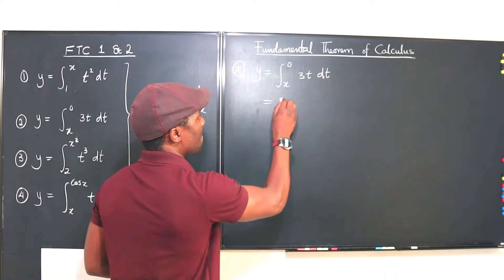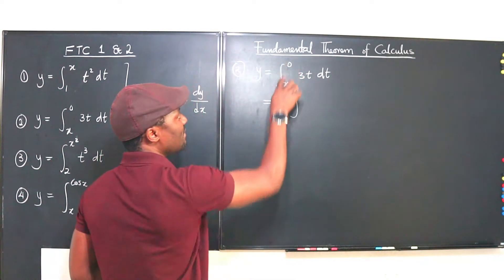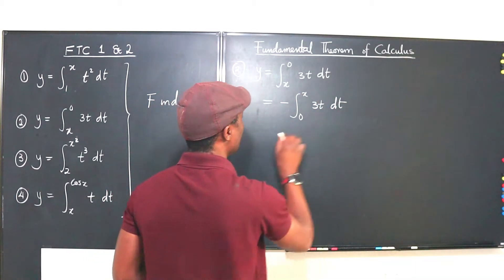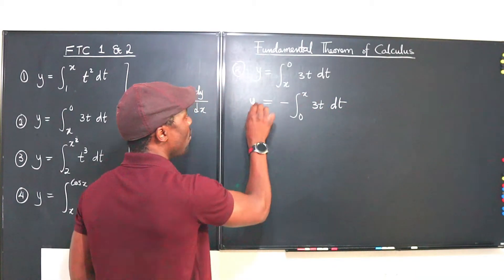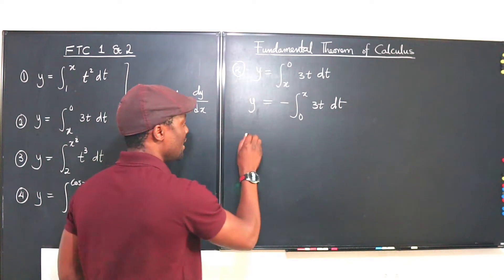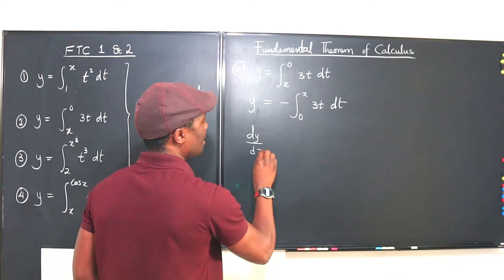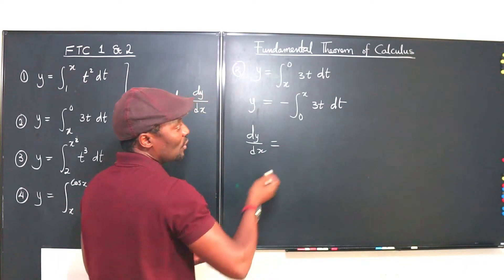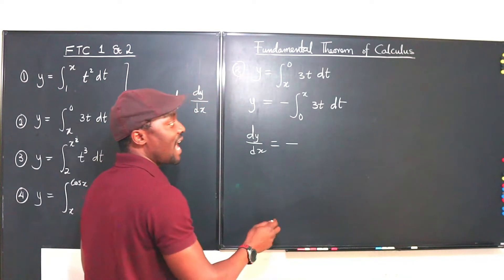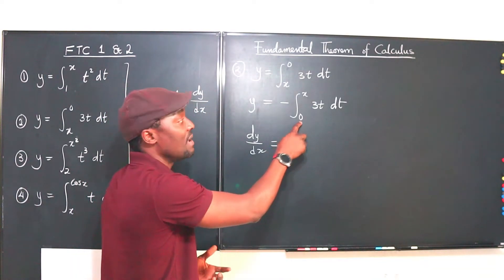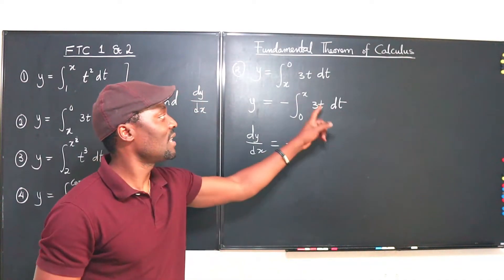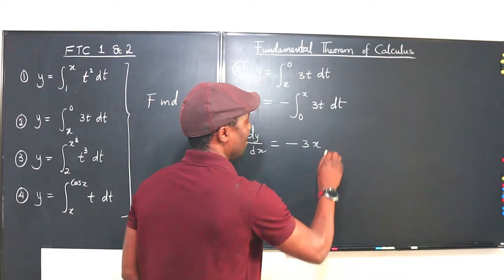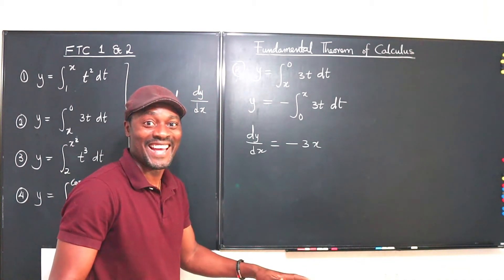So I'm going to write negative and flip these two: the lower limit becomes 0 and the upper limit is now x, with 3t dt. That's what your new y is. So let's take the derivative — dy/dx will be equal to negative, and because the lower limit is now a constant and the upper limit is a variable, we take the variable down into the function. That's negative 3x. And that's it.